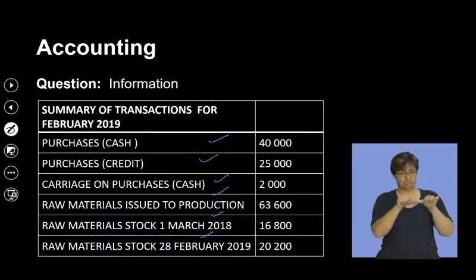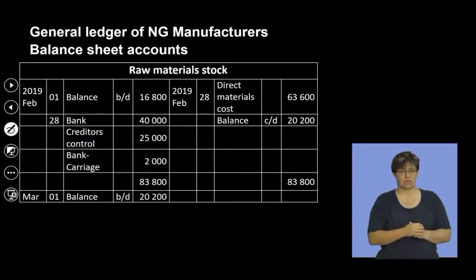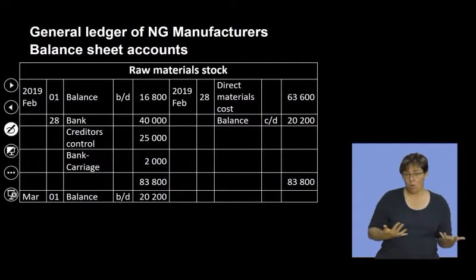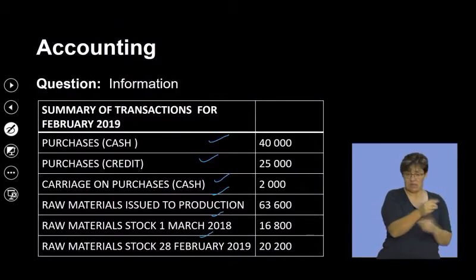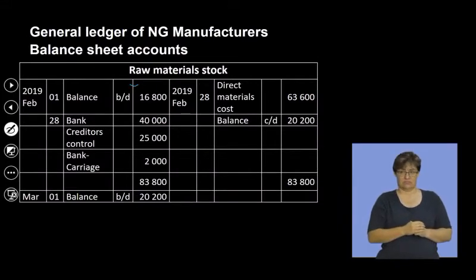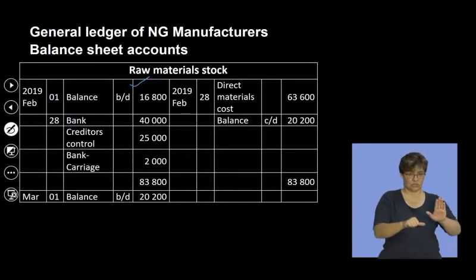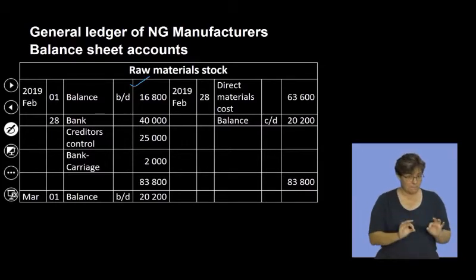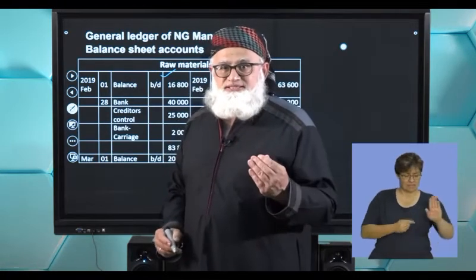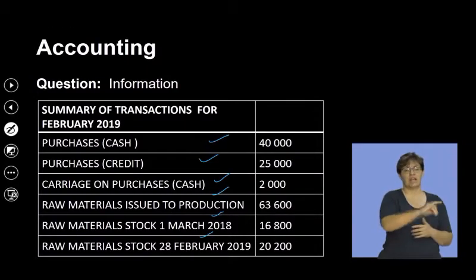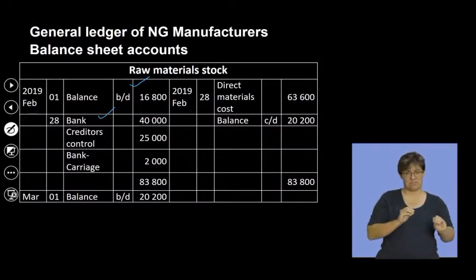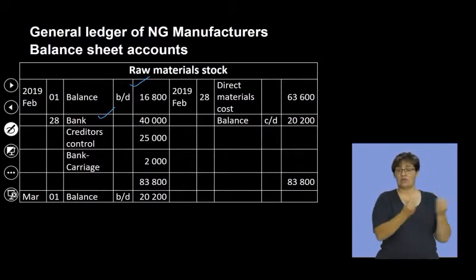You start off this account with a balance at the beginning of your financial year. The stock of raw materials at the beginning of the year was 16,800. So on the debit side, as an asset account, the balance brought down is 16,800. Did we buy materials for cash? Yes — we purchased for cash 40,000. The entry is a debit to raw material stock, with the contra entry being bank, since the stock account is an asset increasing in value.